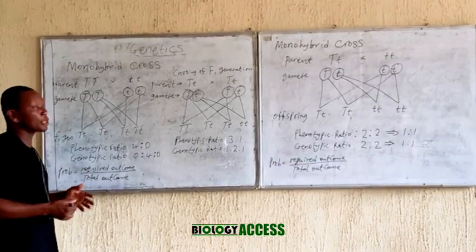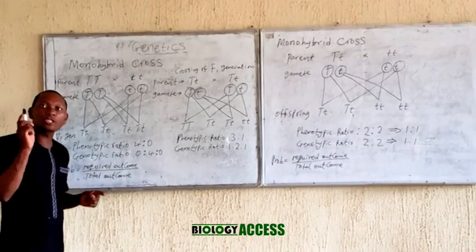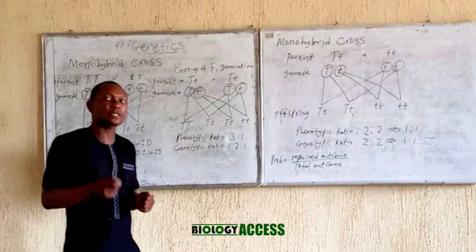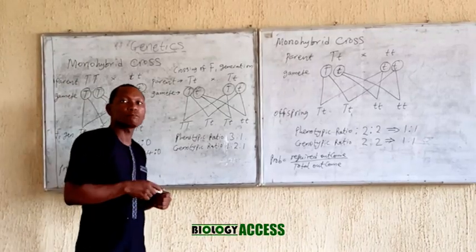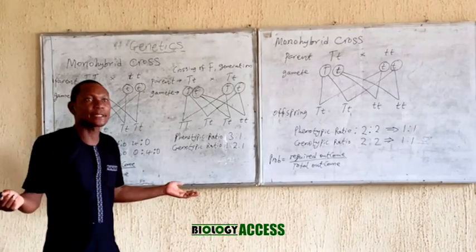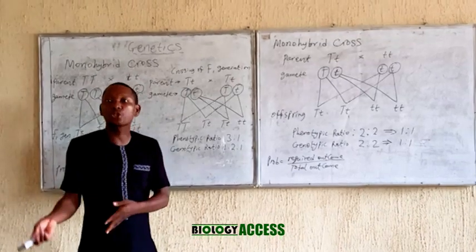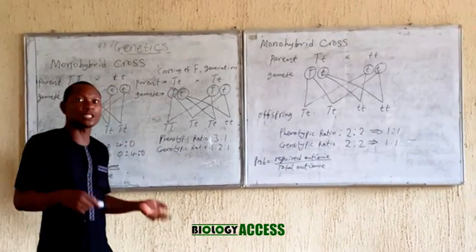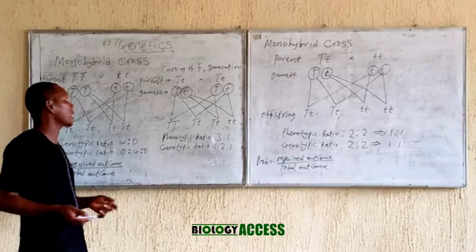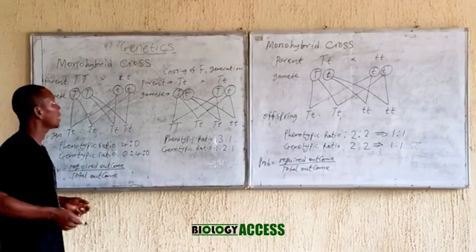Monohybrid cross is actually a cross that involves just one particular character. An example of such a character is height — whether it is short or tall, it is still one character. Complexion is also a character. So here I am taking height as our example.